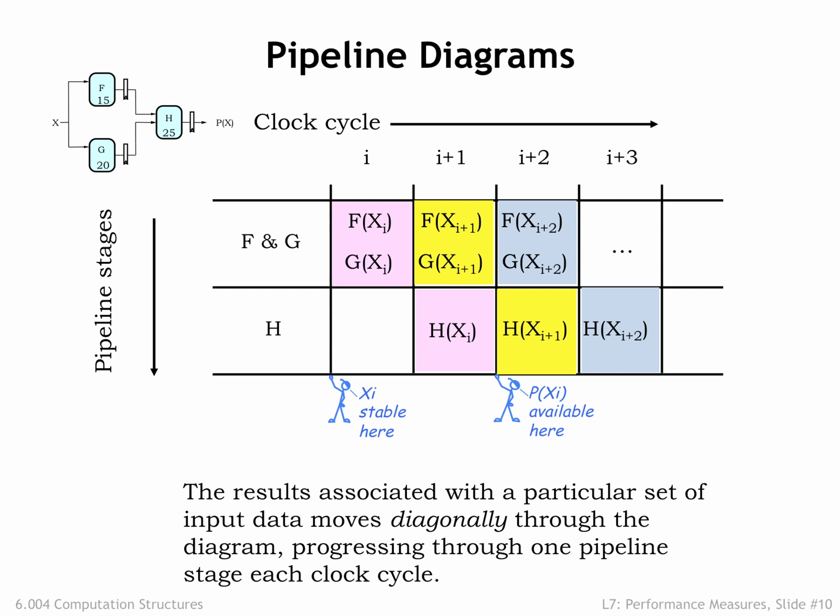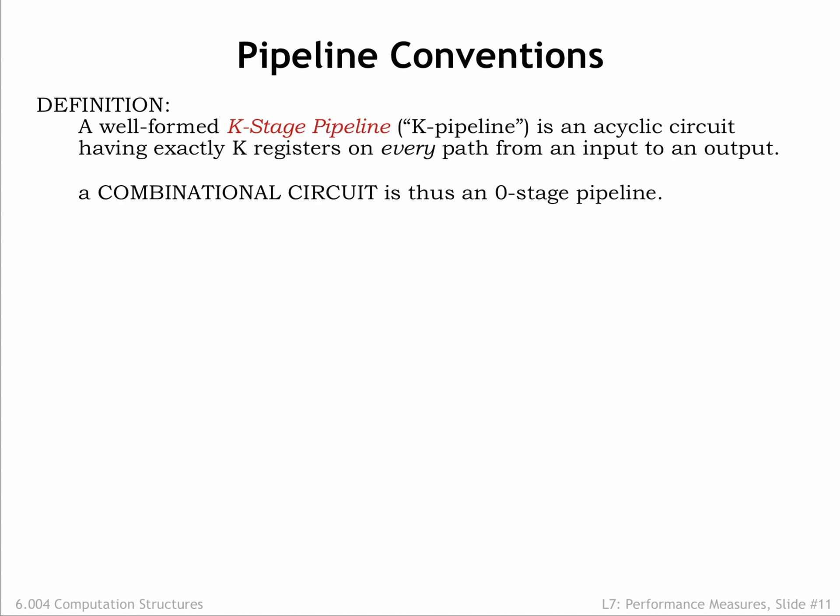We'll define a K-stage pipeline, or K-pipeline for short, as an acyclic circuit having exactly K registers on every path from input to output. An unpipelined combinational circuit is thus a zero-stage pipeline.